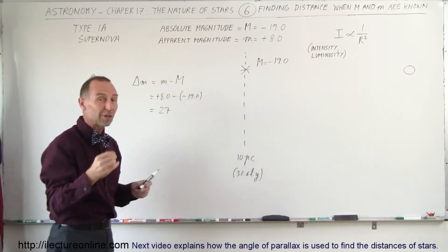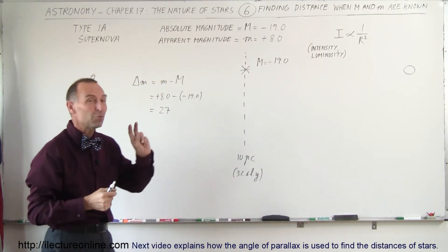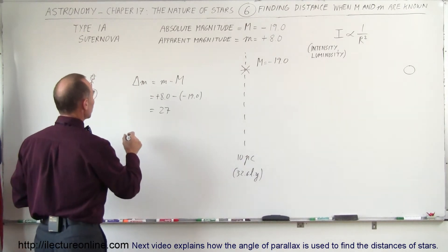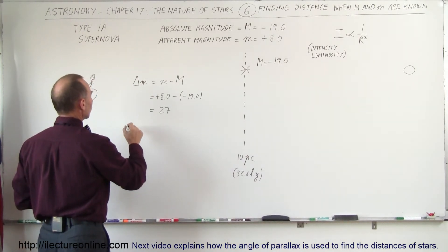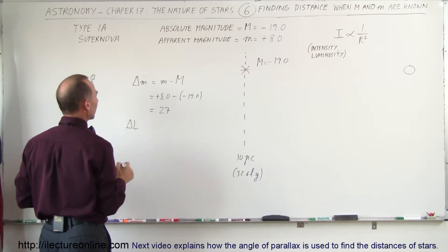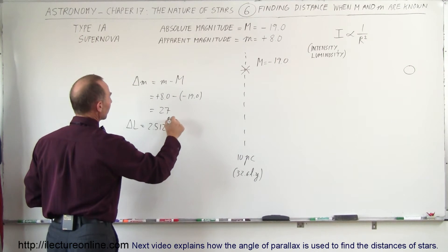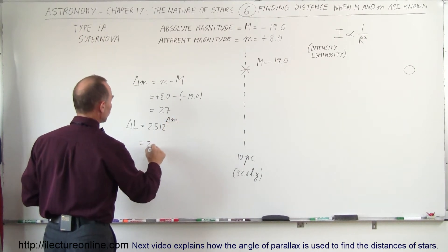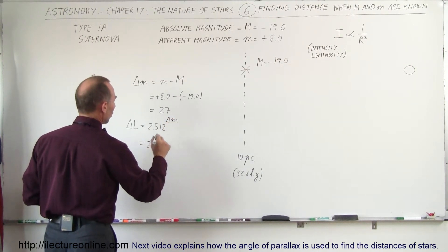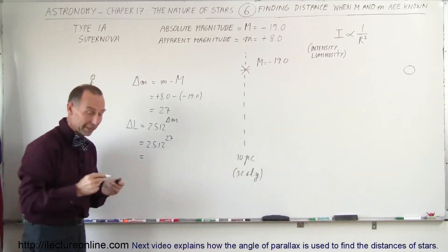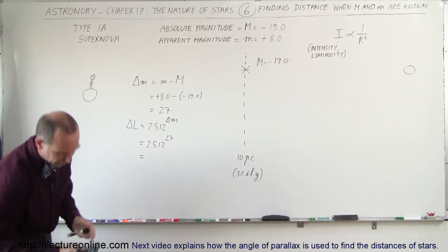The fact that it's a whole lot dimmer the way it appears, it must be really far away. We're trying to find that distance. So the next thing we do is we convert that to the difference in the luminosity. So that would be equal to 2.512 raised to the difference in the magnitudes, so 2.512 raised to the 27 power.